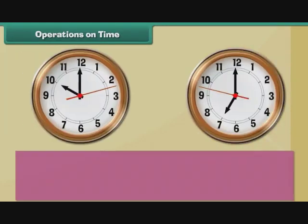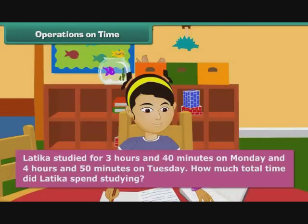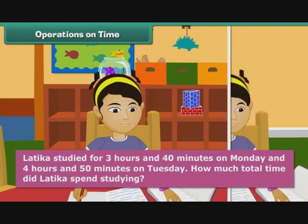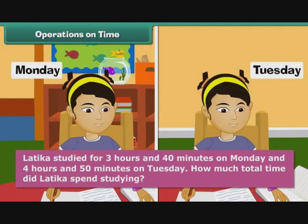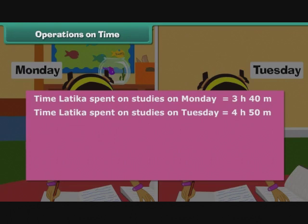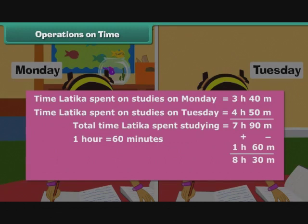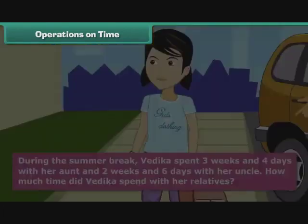Let us learn to perform addition and subtraction on time. Lethika studied for 3 hours 40 minutes on Monday and 4 hours 50 minutes on Tuesday. Total = 7 hours 90 minutes. Since 1 hour = 60 minutes, we subtract 60 from 90 and add 1 to 7 hours. Therefore, Lethika spent 8 hours and 30 minutes studying.